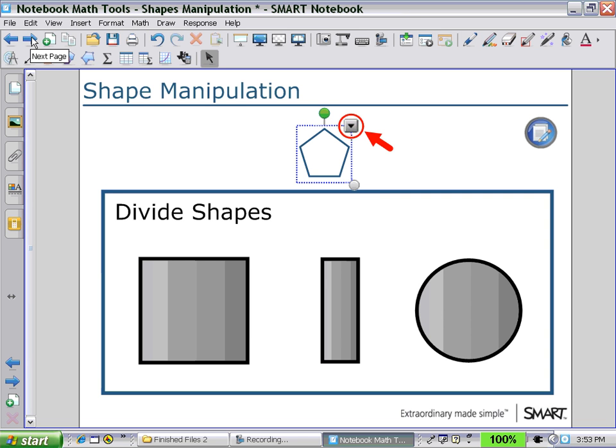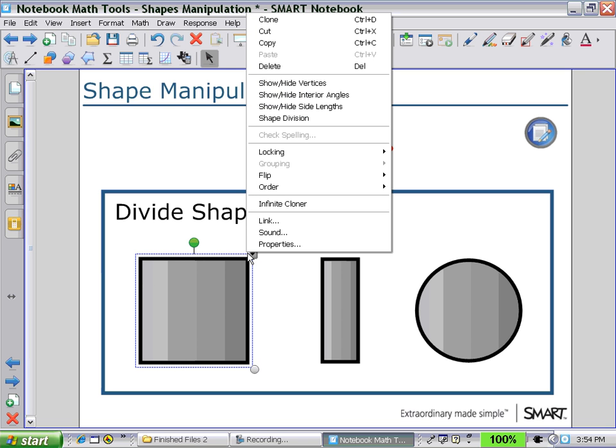Now we'll look at how to divide shapes in the study of fractions. So here we have a square, a rectangle and a circle, and we can divide these into different number of sections. So in the first case, we'll divide the square.